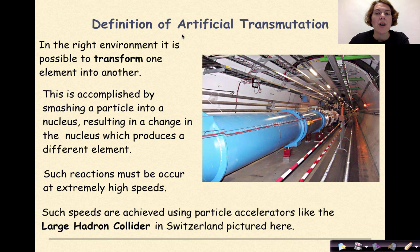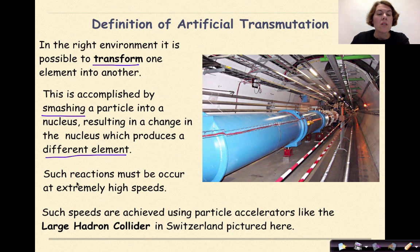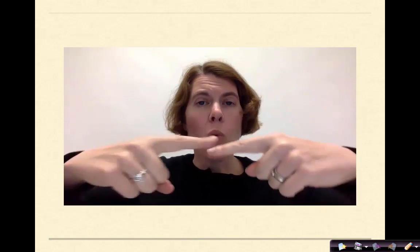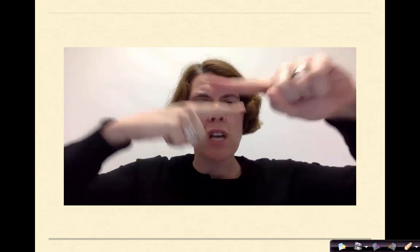Now let's talk about artificial transmutation. In the right environment, it is possible to transform one element into another. This is accomplished by smashing a particle into a nucleus, resulting in a change in the nucleus which produces a different element. Such reactions must occur at extremely high speeds, achieved using particle accelerators like the Large Hadron Collider in Switzerland. We're having two particles traveling in opposite directions smash together to produce new particles.